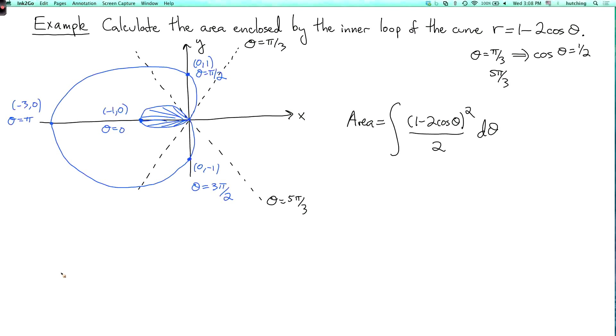If we integrate from pi over 3 to 5 pi over 3, then we would get the area of the following. As theta starts at pi over 3 and goes up to 5 pi over 3, the curve looks like this.